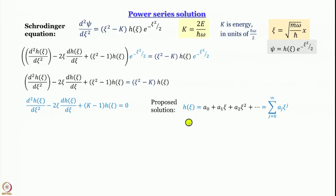Having proposed this solution, we now differentiate h(ξ) not once but twice with respect to ξ, and plug those first and second derivatives back into the equation. Since h(ξ) is itself written as a summation, we plug that in as well, then use a property of power series to obtain the solution.